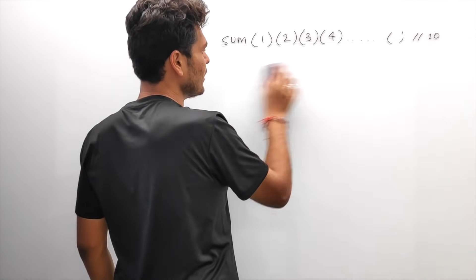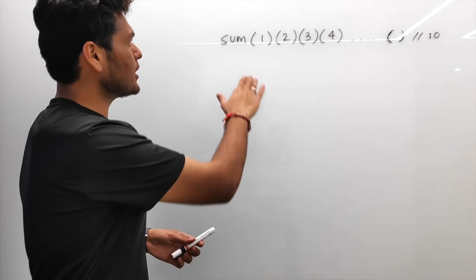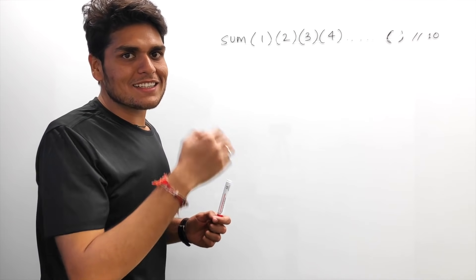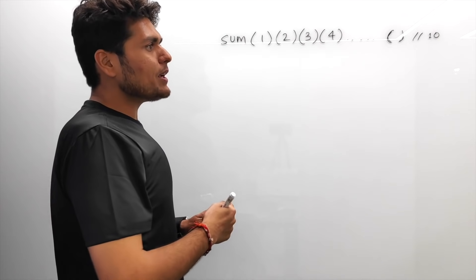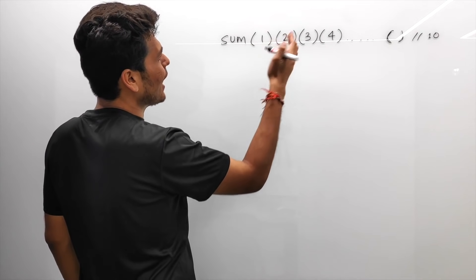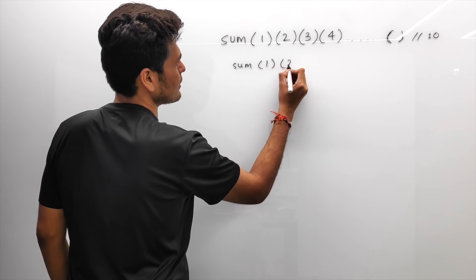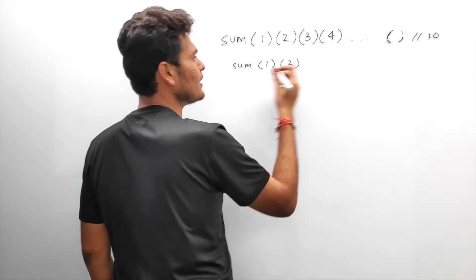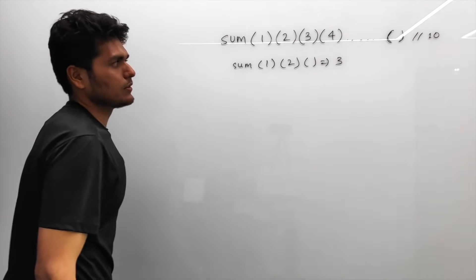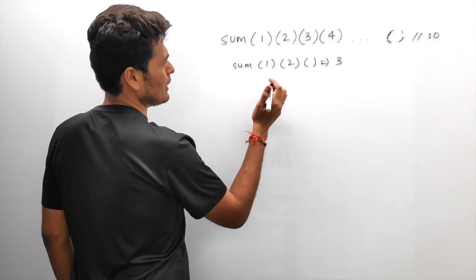Functions are allowed to return other functions — they behave just like another variable. That was a little background about how functions work in JavaScript under the hood, and it is valid syntax. Whenever you face this type of problem in an interview, break it into smaller parts. Let's first solve it for just two arguments — `sum(1)(2)` — which should return 3.